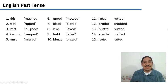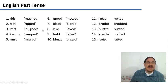Let's look at another example from English, the past tense. So, these verbs are in the past tense: reached, ripped, laughed, camped, and missed. And here, the allomorph of the past tense always shows up as a T. Reached, ripped, laughed, camped, missed.